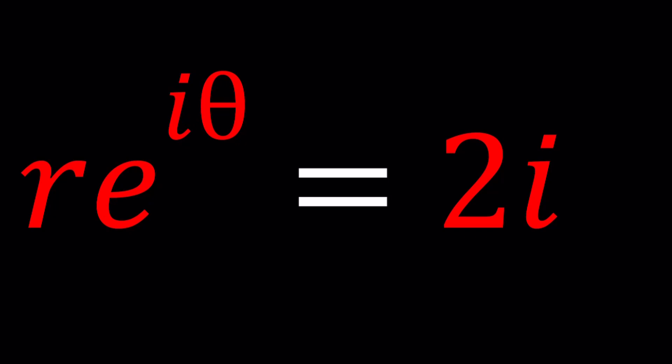We have an equation, r times e to the power i theta equals 2i. And we're going to be solving for two variables, r and theta. Because e and i are constants, we're going to be solving for r and theta.